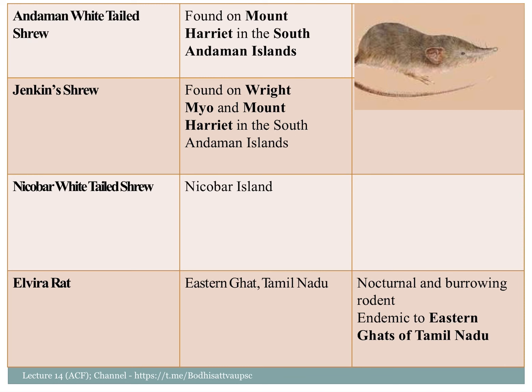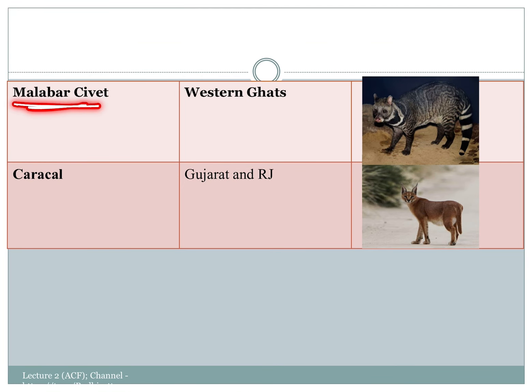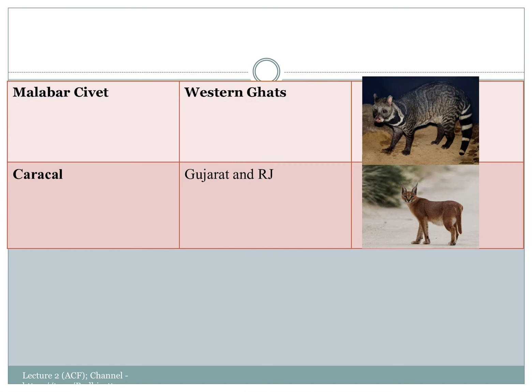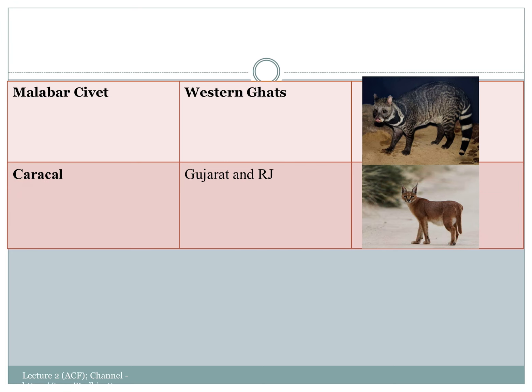If you have the plants, you will be able to see the tribal community use them. This is a great thing observed in the tribal community. You can see it in Western Karachma. We have recently seen arrivals in Gujarat and Rajasthan, but it has been classified as a critically endangered species.